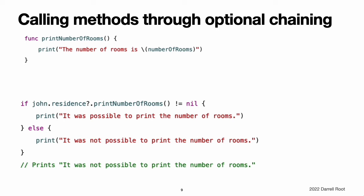This means that they return a value of void or an empty tuple. If you call this method on an optional value with optional chaining, the method's return type will be optional void, not void, because return values are always of an optional type when called through optional chaining. This enables you to use an if statement to check whether it was possible to call the printNumberOfRooms method, even though the method does not itself define a return value. Compare the return value from the printNumberOfRooms call against nil to see if the method call was successful.